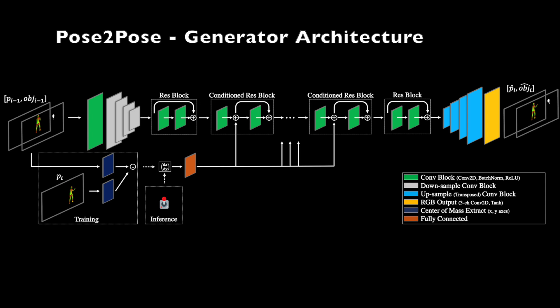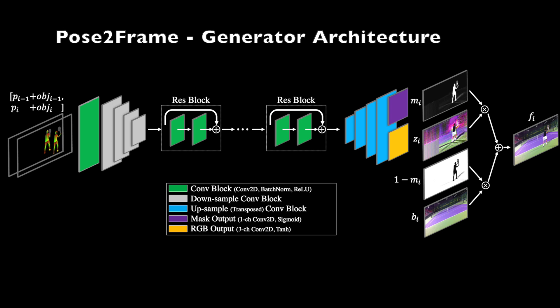During training, the object is extracted as the semantic segmentation of the tennis racket. The pose-to-frame network generates two outputs: mask and image. Dedicated losses ensure that the mask is continuous and the blending natural. Note that in regions of shadow, the mask is not binary and takes intermediate values. The same is true of character boundaries, especially in regions of uncertainty, such as hair.